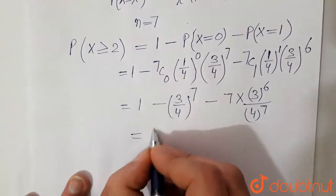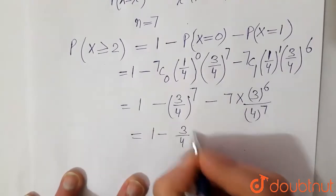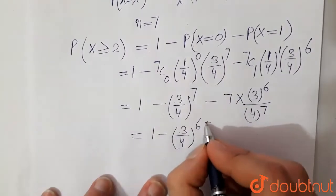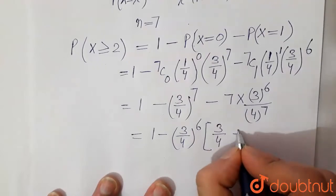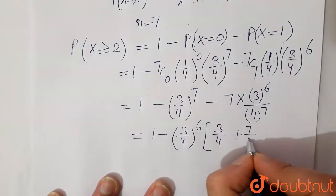So this becomes 1 minus 3 by 4 to the power 6 taken common, and this becomes 3 by 4 plus 7 by 4.